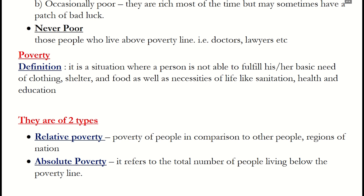A. Relative poverty: poverty of people in comparison to other people, regions, or nations. For example, when we compare two states like Maharashtra and West Bengal and the number of poor in these two states. B. Absolute poverty: it refers to the total number of people living below the poverty line.